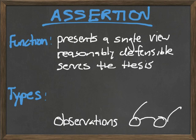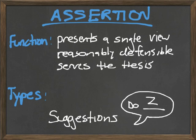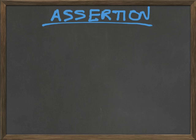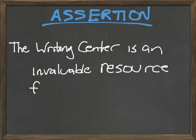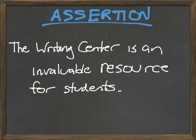There are also observations and suggestions. The point of an assertion is that it presents something that can be argued. So let's say I'm trying to convince my students to use the Writing Center. I might assert: 'The Writing Center is an invaluable resource for students.' It's an opinion that can be reasonably defended, but the work of defending this point of view is not the assertion's job.